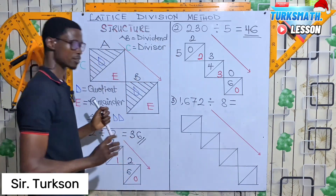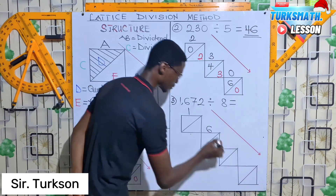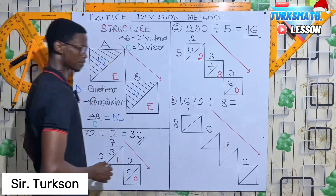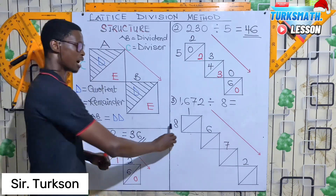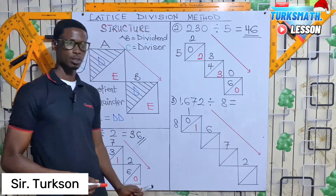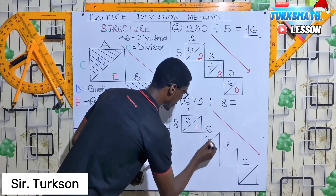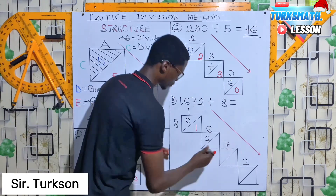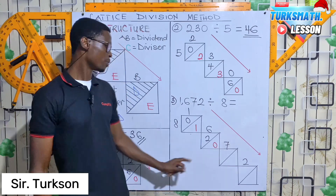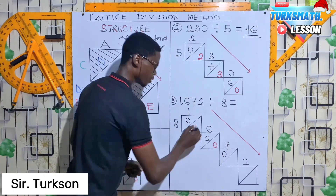Draw your lattice and label it: 1, 6, 7, 2 with divisor 8. Now let's divide. How many 8s are in 1? Zero, remainder 1. That gives us 16. How many 8s are in 16? That is 2, remainder 0. We have no carry into the next box, so it stays as 7. How many 8s are in 7? Zero, remainder 7.